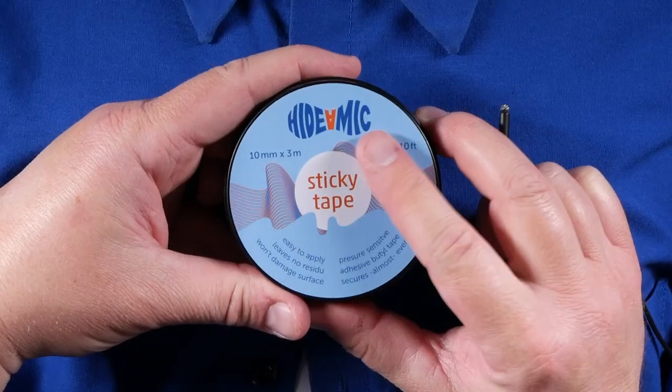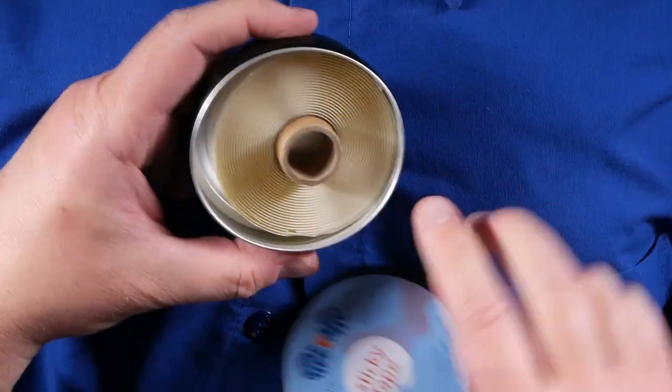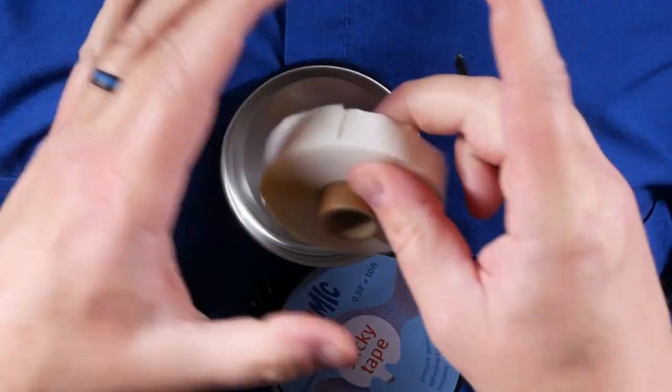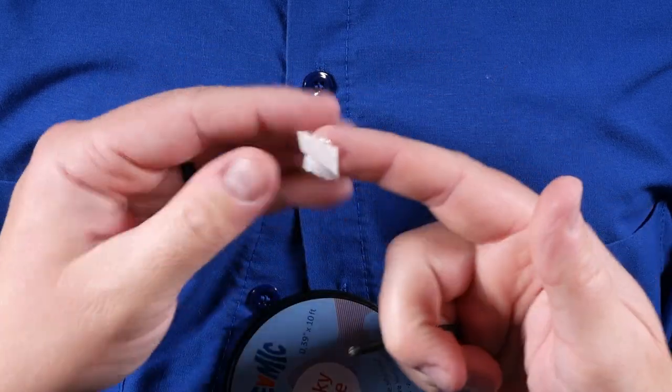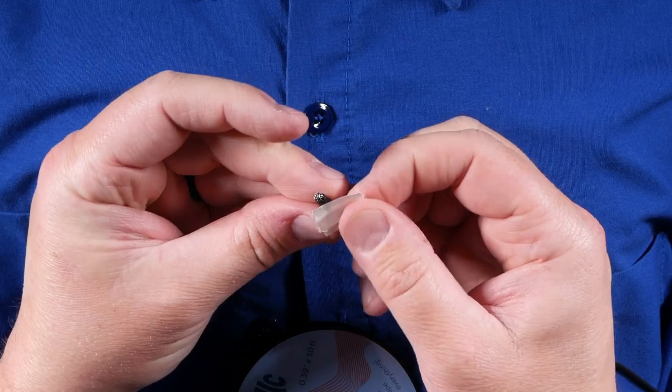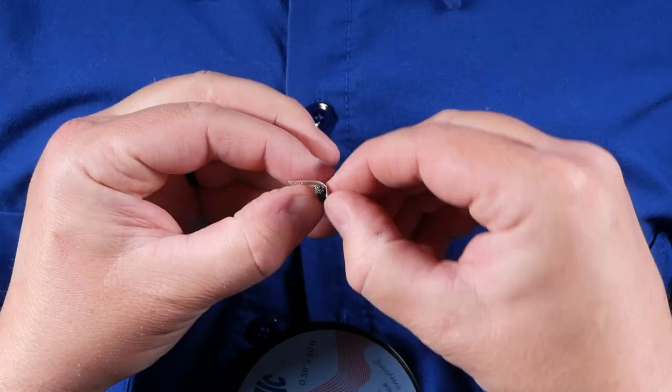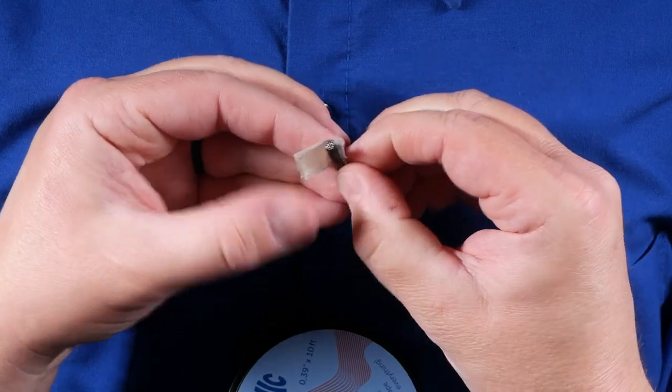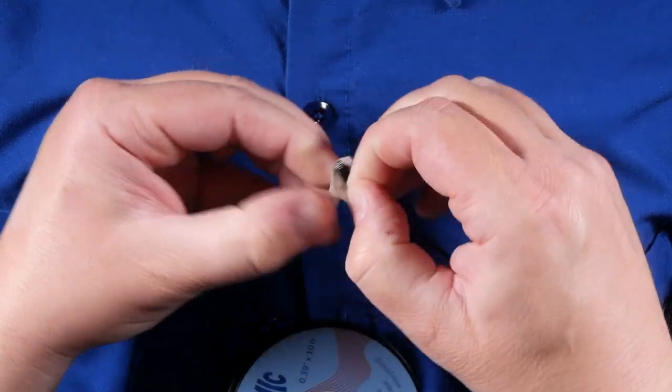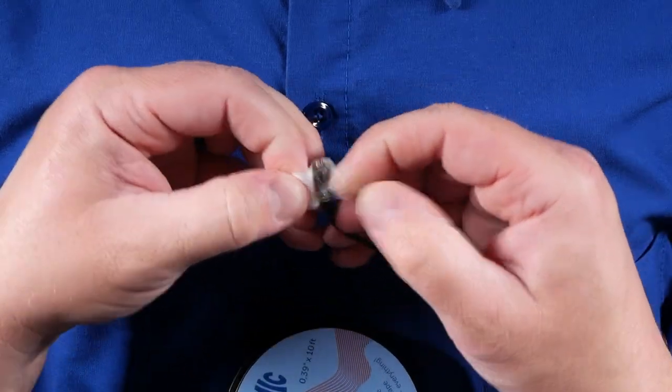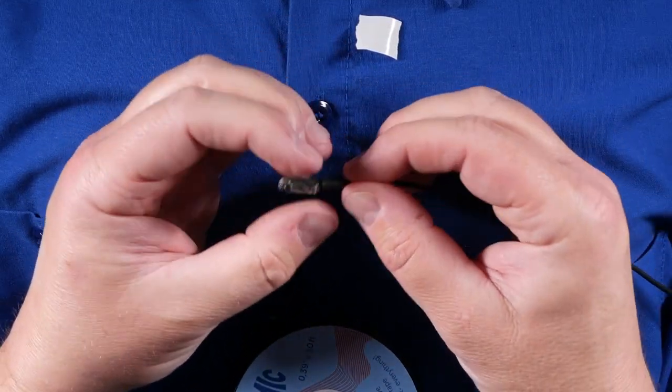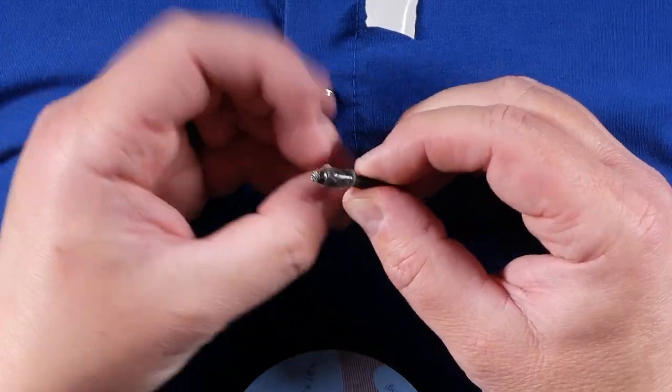Another thing hide-a-mic sells is the sticky tape, which is basically adhesive butyl tape. If you wanted to make more of an old-school type rig for your tie, you could very easily pull off a little bit of the tape and then wrap just a little bitty pinch of it around your microphone. You can wrap it all the way around, and you can now stick this inside of a tie and it's going to hold from all the way around. Obviously make sure none of it's on the capsule itself.